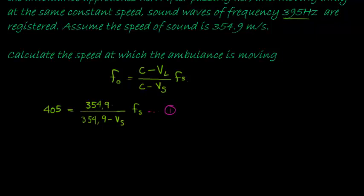Let's get another equation. The other equation is 395 is equal to 354.9 divided by 354.9, and now you notice that now it's not negative anymore because it's going in the opposite direction. In other words, velocity comes into play here where we must use a plus there because it's in the opposite direction. That now becomes a positive times the frequency of the source. This is our equation number two.